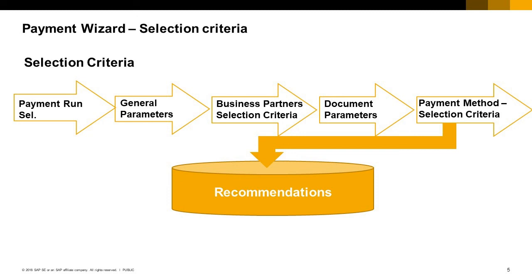Based on these selection criteria, the system creates a recommendation report — a list of suggested payments. You can accept or reject the recommendations. Using the Add Manual Row button, you can create a payment document or a payment order row between a house bank account and a business partner or a target account without referencing any documents in SAP Business One. The Non-Included Transactions button creates a list of all open items that could not be included in the payment run.